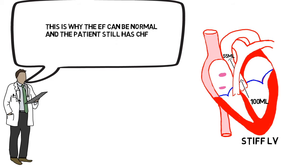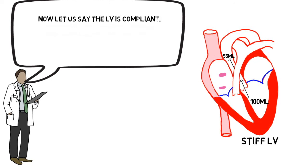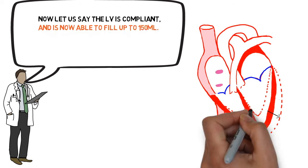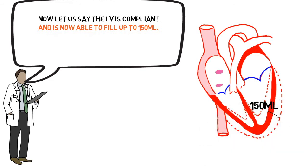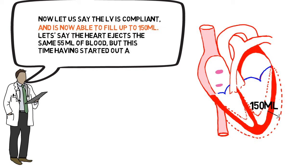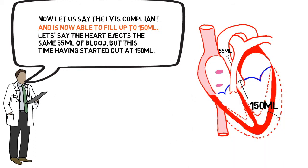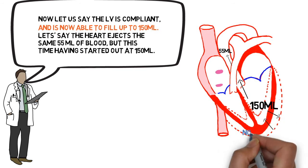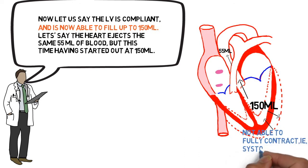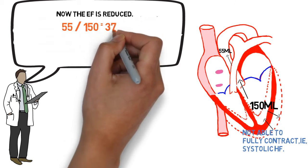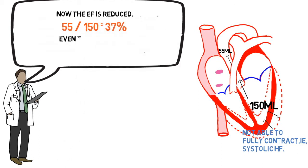For comparison, if the left ventricle is compliant and relaxes properly, it can fill up to 150 mL. If the heart then ejects the same 55 mL but cannot fully contract — i.e., systolic heart failure — the ejection fraction is reduced: 55 ÷ 150 = 37%. Even though 55 mL is still being ejected, the ejection fraction is reduced. This is systolic heart failure.